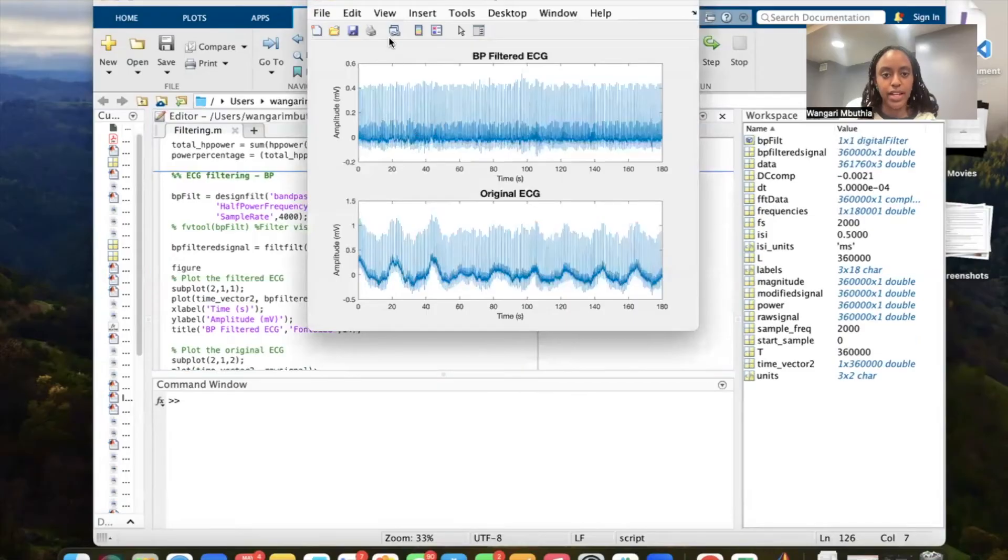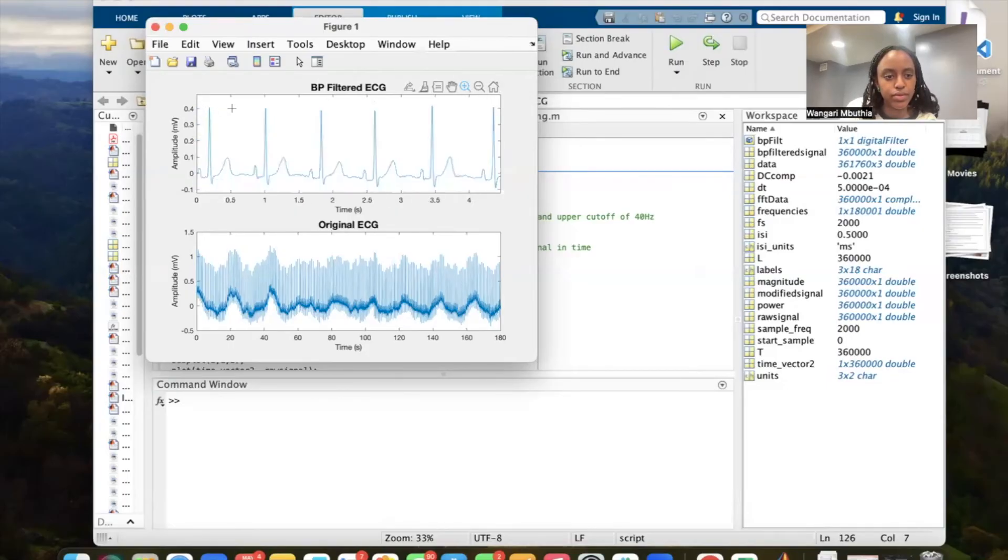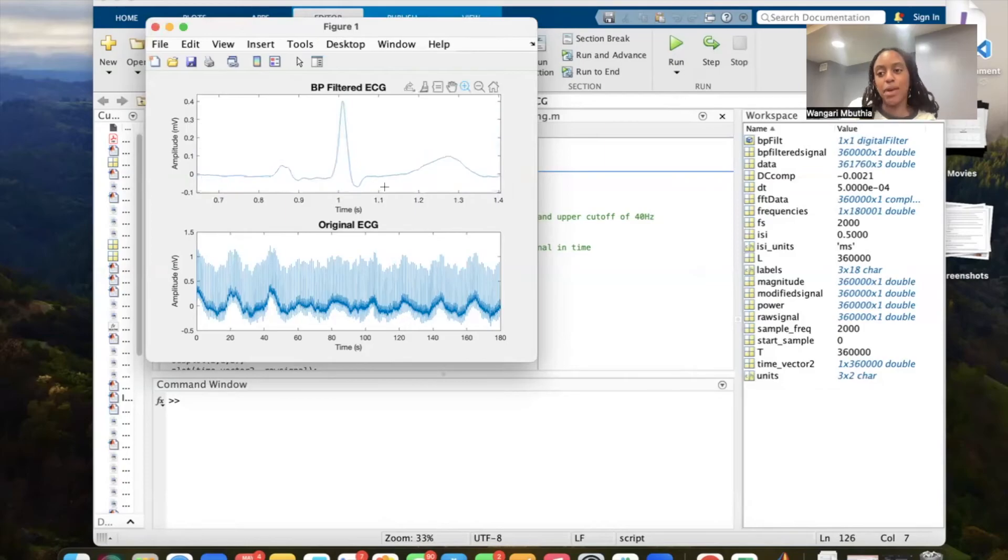we can get our filtered output ECG signal. We can immediately see a much smoother baseline. And if we zoom in, we can see much clearer peak detection.